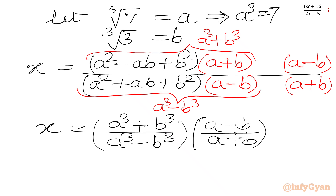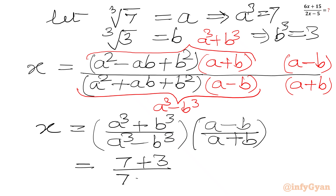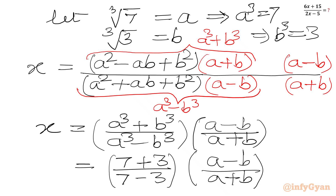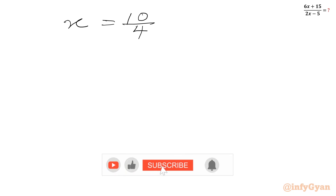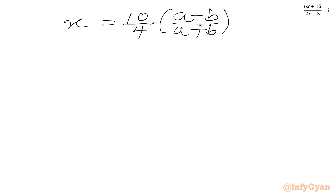Since cube root 7 is a, we can write a cubed equal to 7. And b cubed will be equal to 3. Let us apply the values: (7 + 3) over (7 - 3) times (a - b) over (a + b). That gives 10 over 4, so x equals 10/4 times (a - b)/(a + b), which simplifies to 5/2 times (a - b)/(a + b).